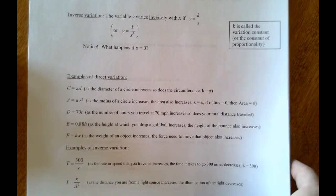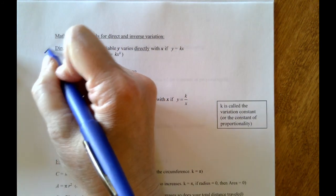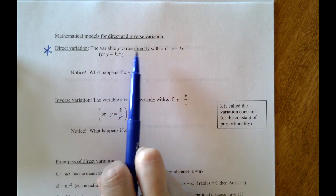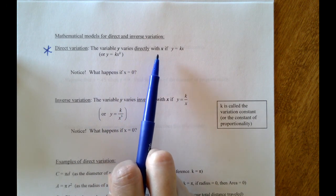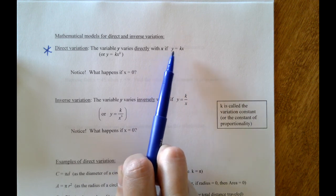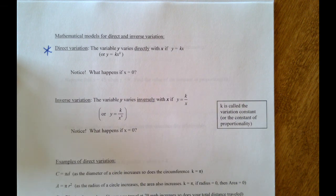So to start working with this, direct variation models have this kind of look to them: the variable y varies directly with x means exactly the same thing as that y equals some constant k times x.